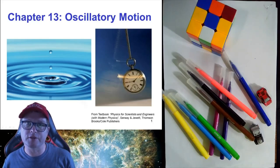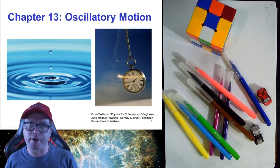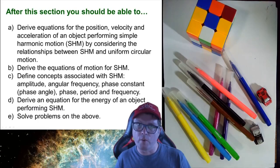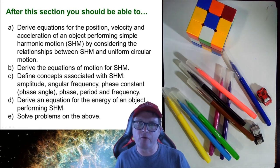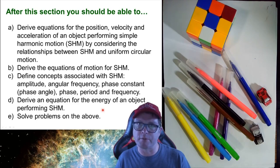Hi there. We carry on now with chapter 13, which deals with oscillatory motion. Oscillatory motion refers to something oscillating or moving to and fro. In general, it refers to a motion which is periodic in nature. For example, in the picture on the right, we have a watch acting as a pendulum, swinging to and fro. We're going to consider an object undergoing simple harmonic motion, deriving equations for position, velocity, and acceleration, defining key concepts, and deriving an equation for the energy of such an object.